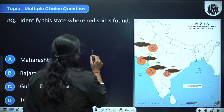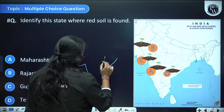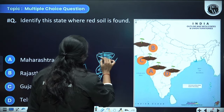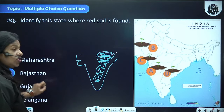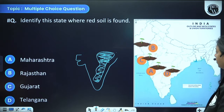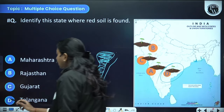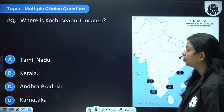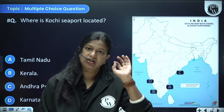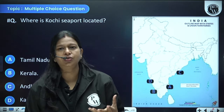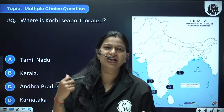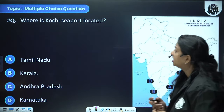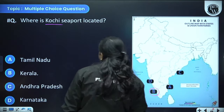Identify the state where red soil is found. Red soil is found on the western edge of the country. Options are Maharashtra, Rajasthan, Gujarat, or Telangana. Telangana is situated there and automatically becomes the answer. Also — where is Kochi seaport located: Tamil Nadu, Kerala, Andhra Pradesh, or Karnataka? The answer is Kerala — option B. Kochi is in Kerala.